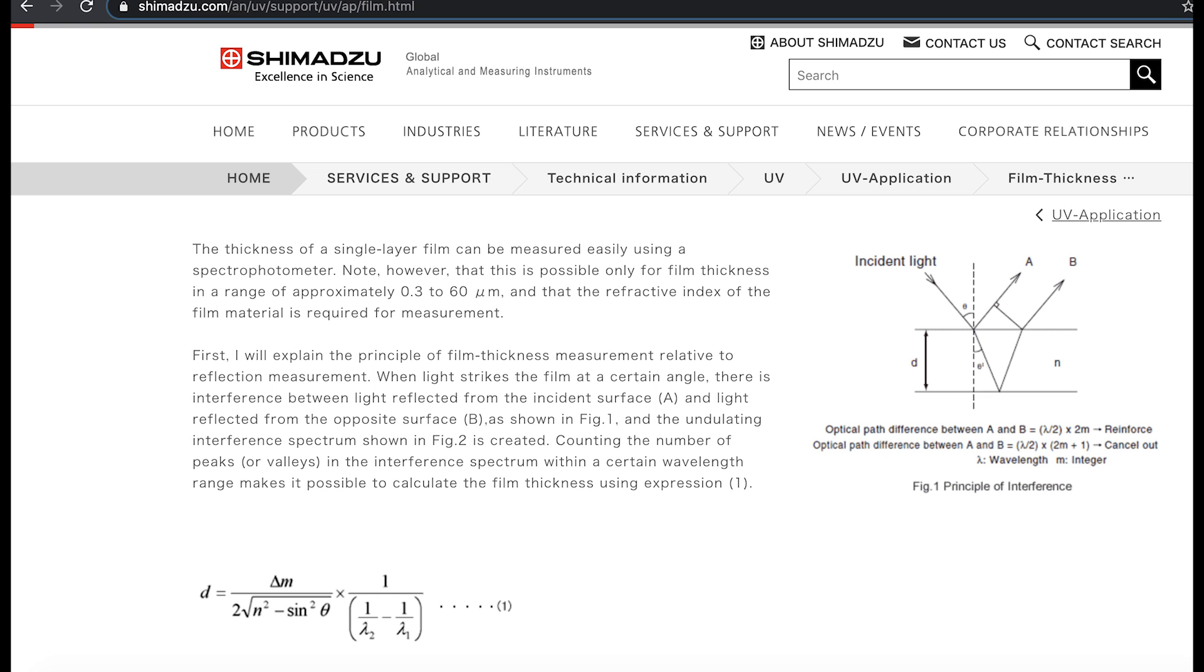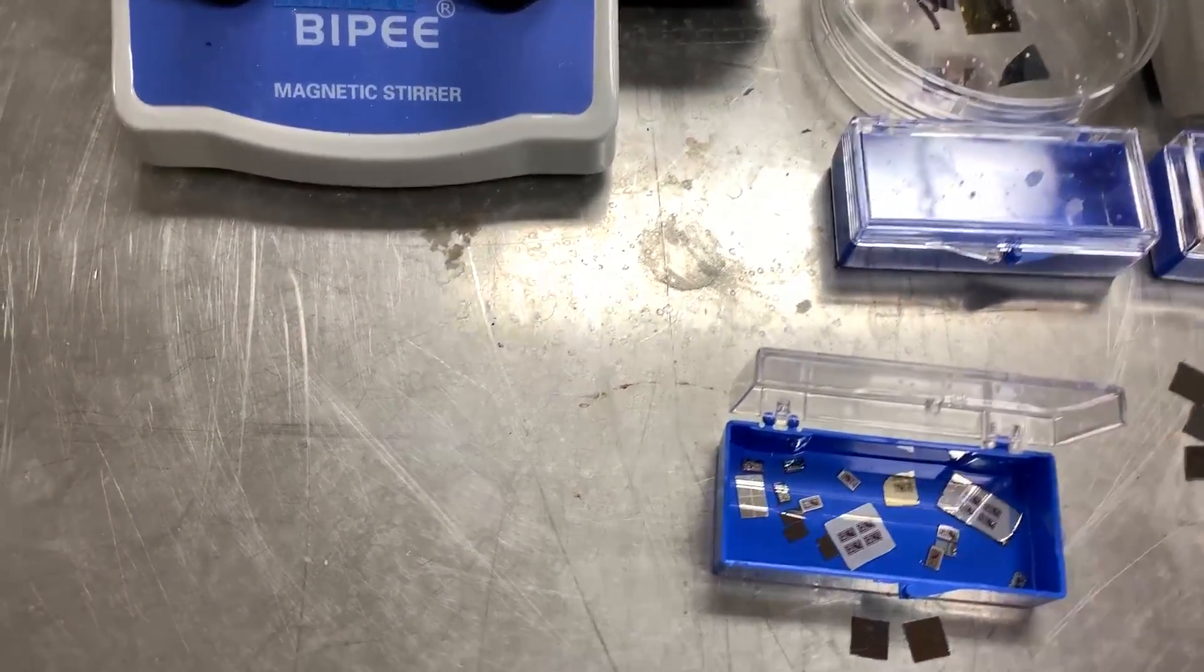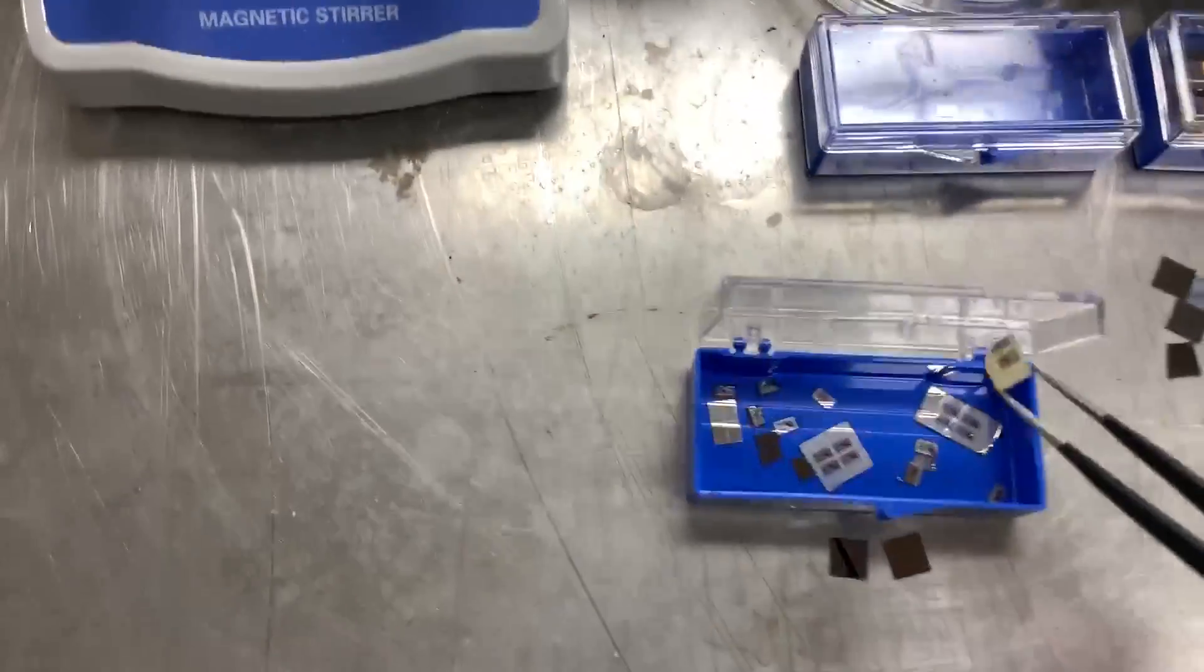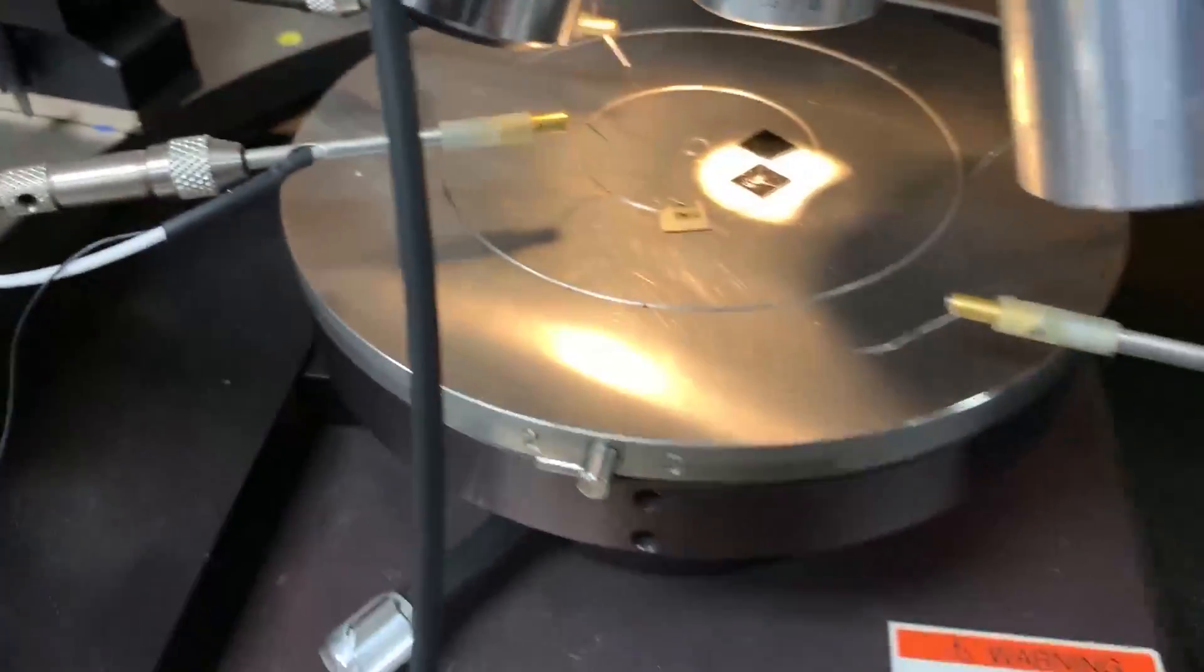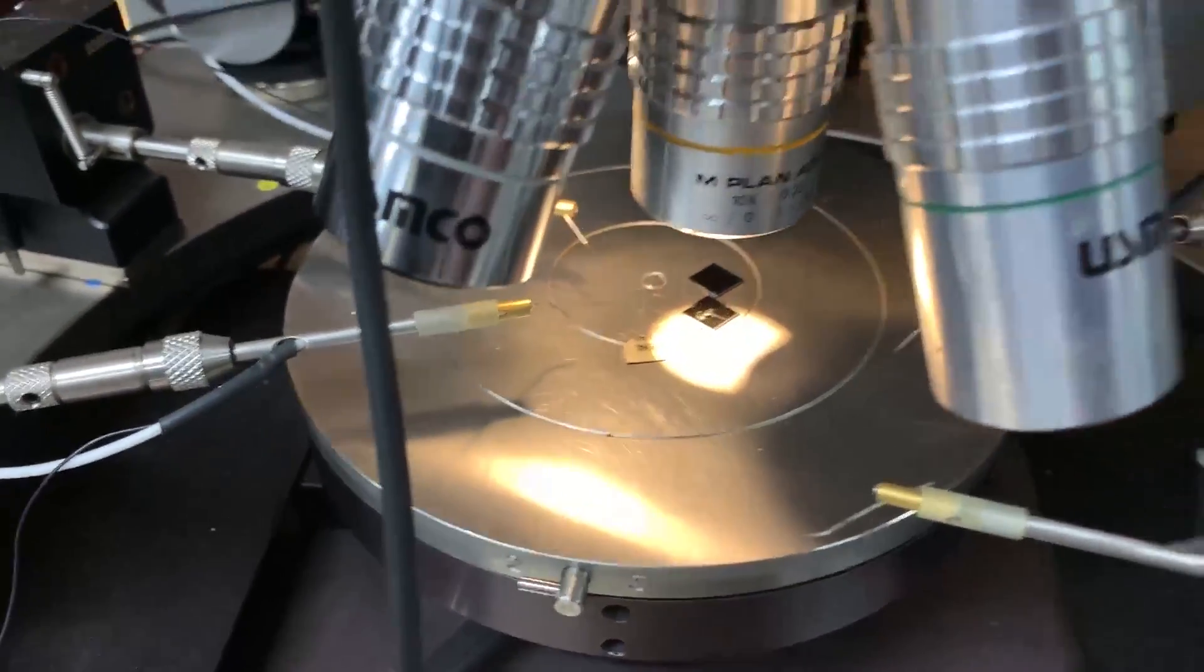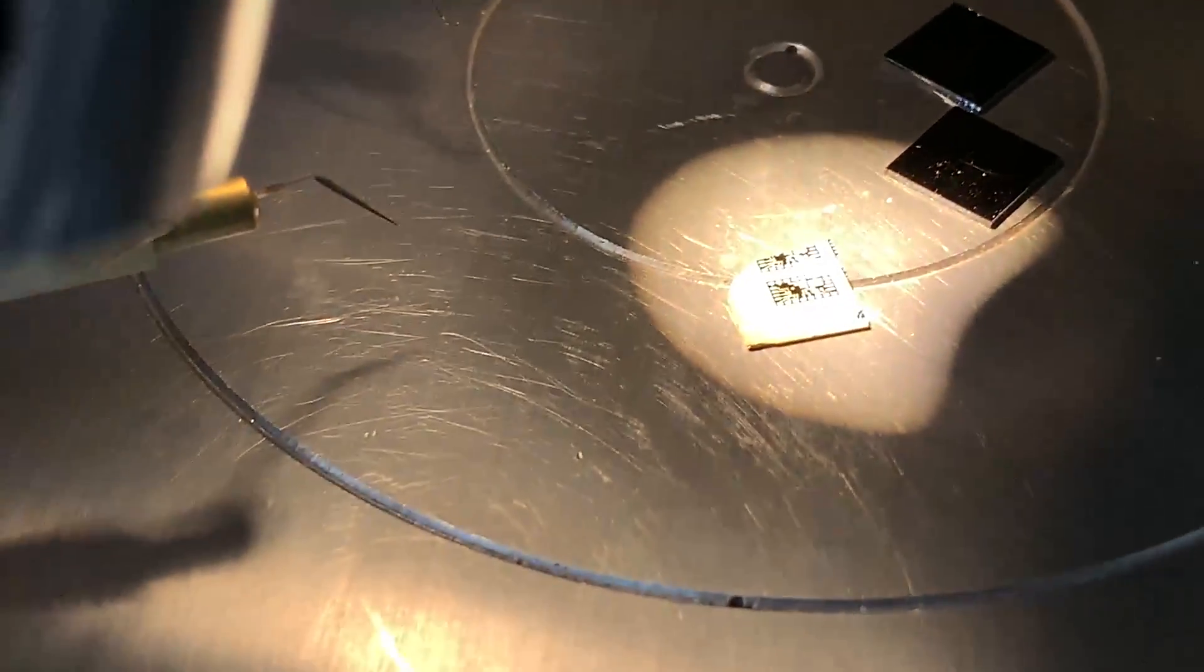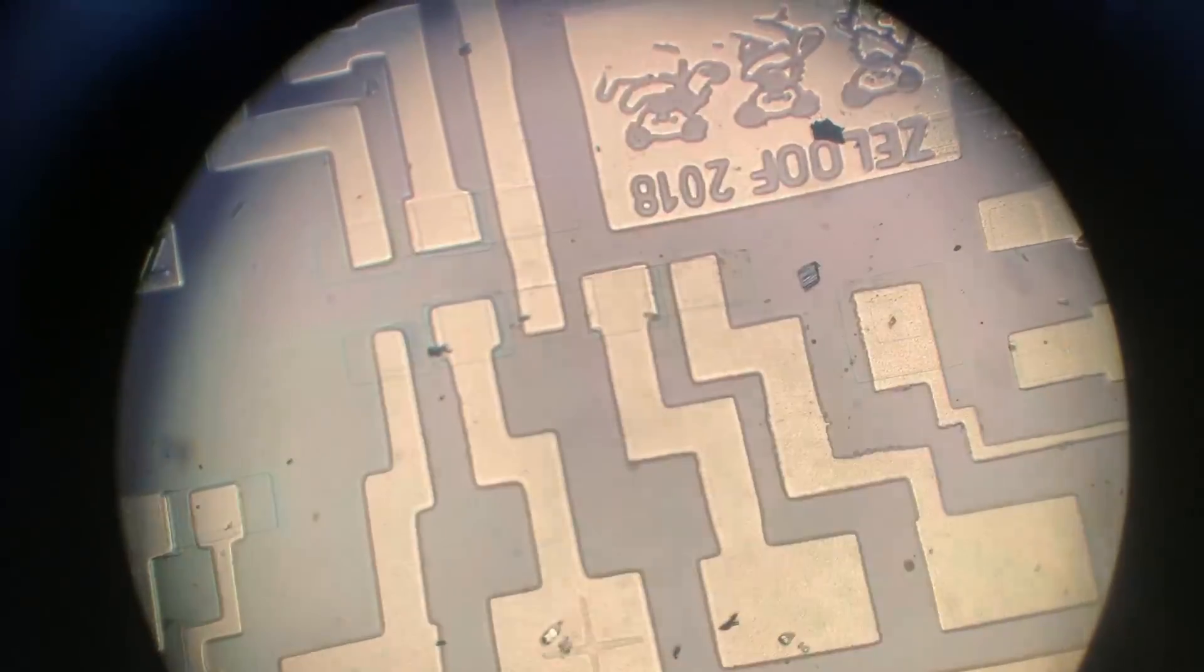I can grab a sample that was coated with some thicker photoresist that was more viscous and this in theory is about a 2 micron film. To measure a new sample I just put it under there and we'll move over the xy stage to kind of focus on the sample we want to look at. This sample is a broken fragment of a chip I made but it's coated in photoresist so it's perfect for this.